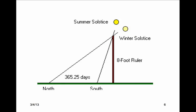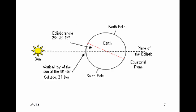They found the length of the year is around 365.25 days and divided the year's cycles into 24 segments, including the four seasons.